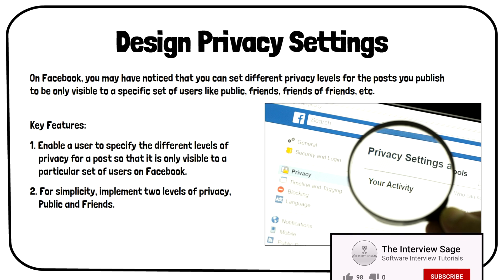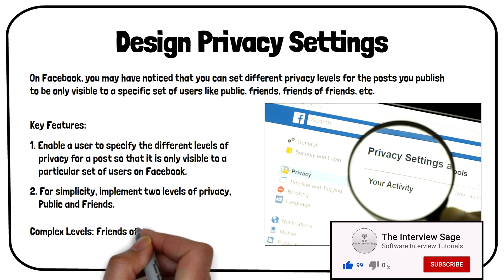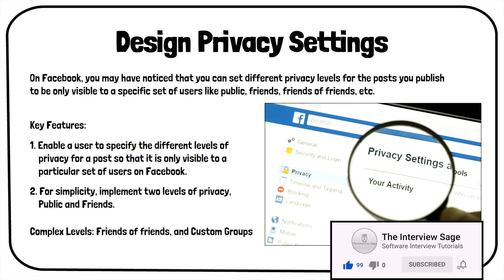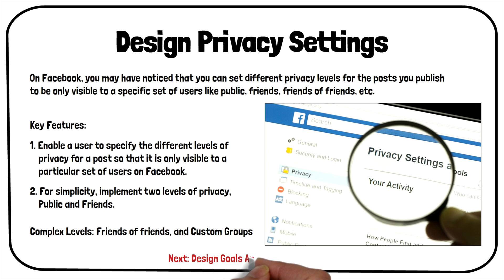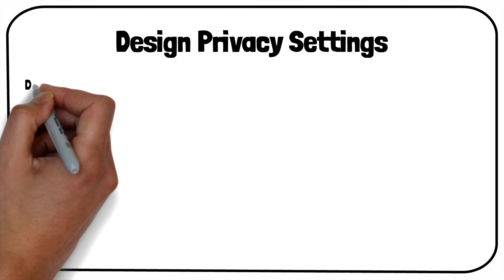We will only implement two levels of privacy: public and friends. More complex levels like friends of friends and custom groups can be discussed towards the end of the interview if time remains. Now let us discuss the design goals and scale estimations for this problem.